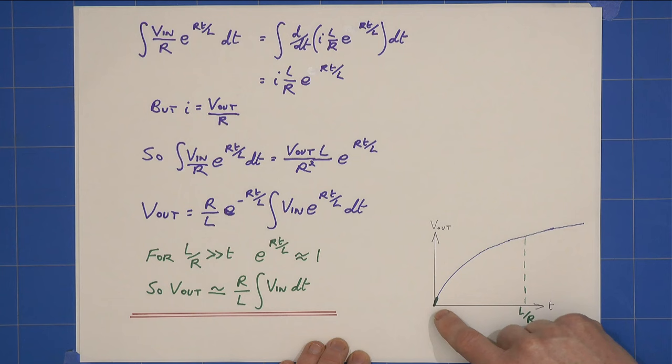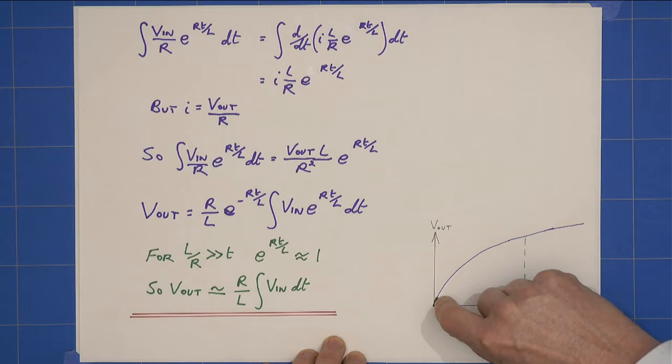If I was to work closer to the l over r time constant, what I would find is I'd be getting this curve and then a curve down, curve up, curve down. But if I stay close to zero, away from the l over r time constant, then I'm virtually on a straight line. OK.